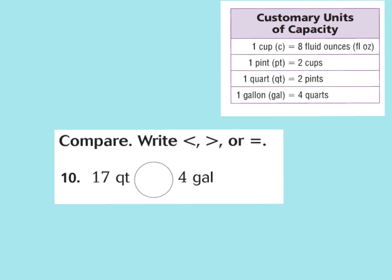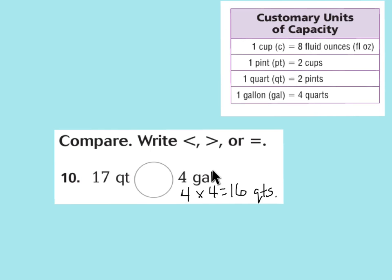For number 10, we're comparing using inequalities — less than, greater than, or equal to. We have 17 quarts and 4 gallons. Let's convert both to the same unit. Converting 4 gallons to quarts: since 1 gallon equals 4 quarts and we're going big to small, we multiply. 4 gallons times 4 quarts equals 16 quarts. So 17 quarts is greater than 4 gallons, by just 1 quart.